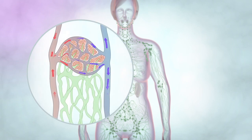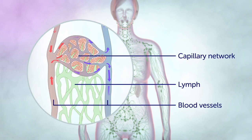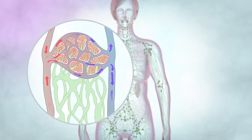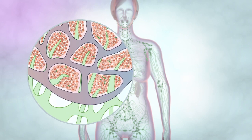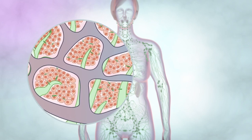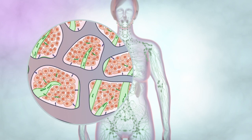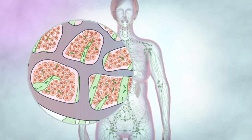The lymphatic system carries a colourless liquid called lymph. As the blood circulates around the body, fluid passes from the blood into the body tissues, carrying food to the cells. This fluid bathes the tissues to form tissue fluid, which collects waste products, bacteria, damaged cells, and cancer cells if there are any.